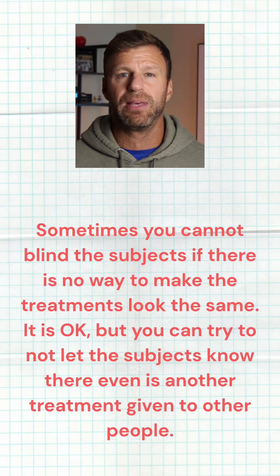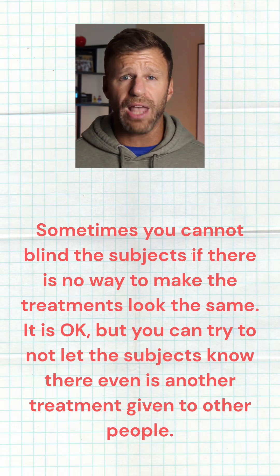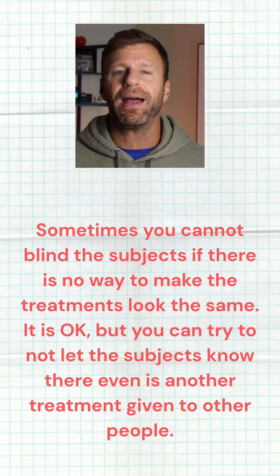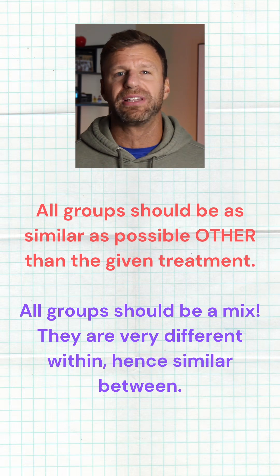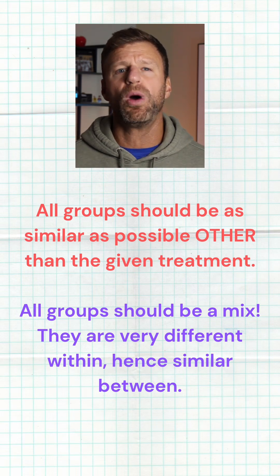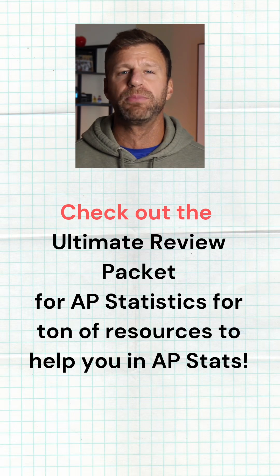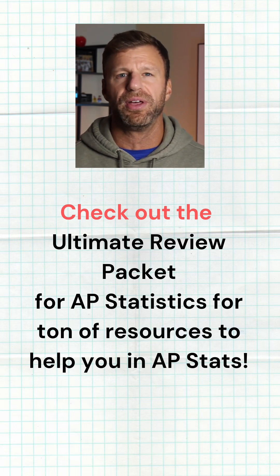Sometimes you can't hide what you're giving them and a placebo can't be used. But with human beings, a placebo is a great idea if you can use it. Going back to the idea of comparison: you have to have at least two treatment groups — that is the first big pillar when it comes to experimental design. And you want those two groups to be treated very similarly, other than what the treatment is that you give them.